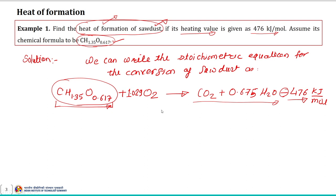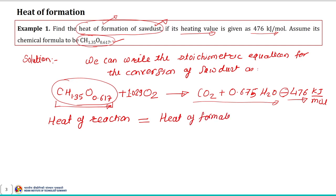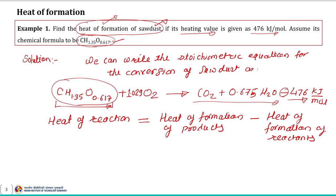With the help of this stoichiometric equation we have to estimate the heat of formation of sawdust. If you recollect our earlier discussion, we discussed the estimation of heat of combustion from a given reaction. The same concept will be utilized here: the heat of reaction, which we also term as heat of combustion, can be represented as the summation of heat of formation of products minus the summation of heat of formation of reactants.